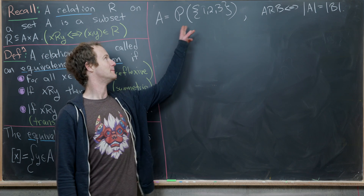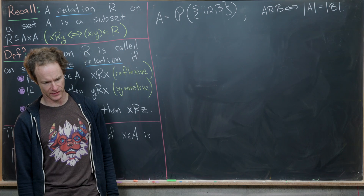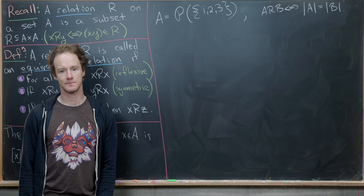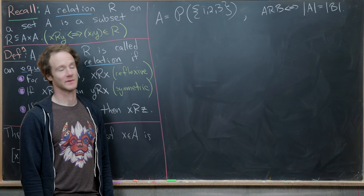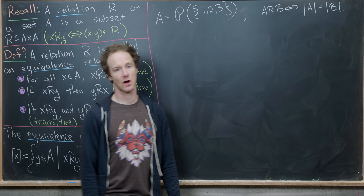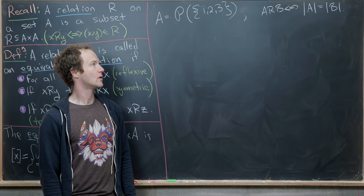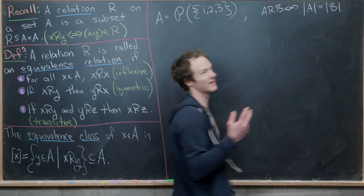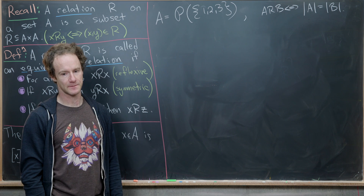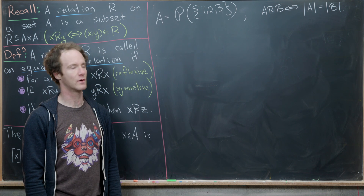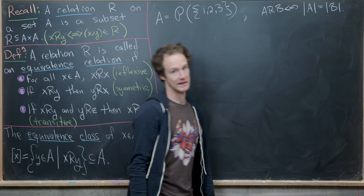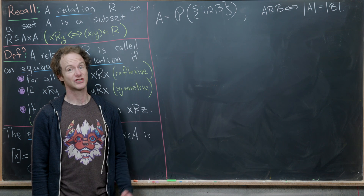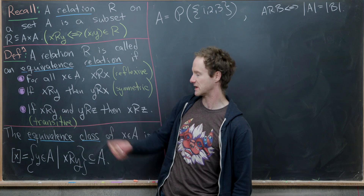For our next example, we let A be the power set of the set {1, 2, 3}. Recall the power set is the set of all subsets; since this is a three-element set, the power set contains eight elements. We say two subsets are related — a R b — if and only if they have the same size, i.e., |a| = |b|. Again, there's not much to check here, since this is built on the back of equality, and equality is reflexive, symmetric, and transitive.